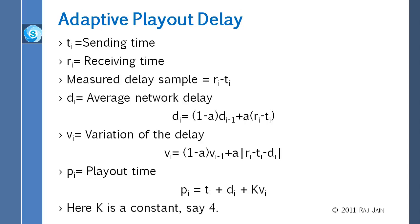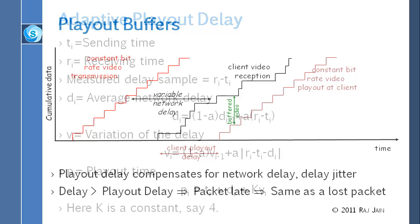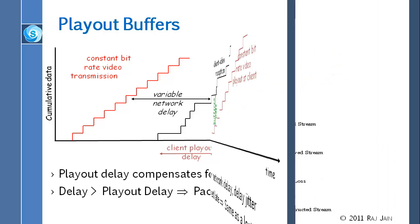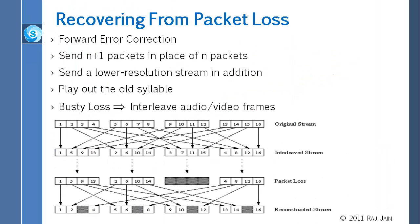This can be plotted as shown. Once the playout buffer delay is decided, you can calculate how much time is left. If the delay becomes negative, the packet arrives late — that is what you need to be careful about. How do you recover from packet loss? Two things: first, you can do forward error correction, meaning you send more bits than strictly needed. You can send n+1 packets instead of n — for example, four packets instead of three.